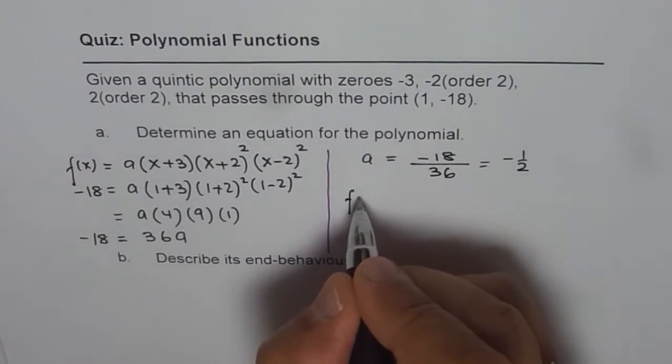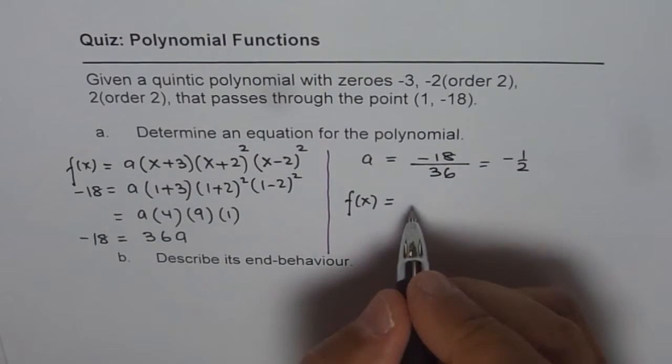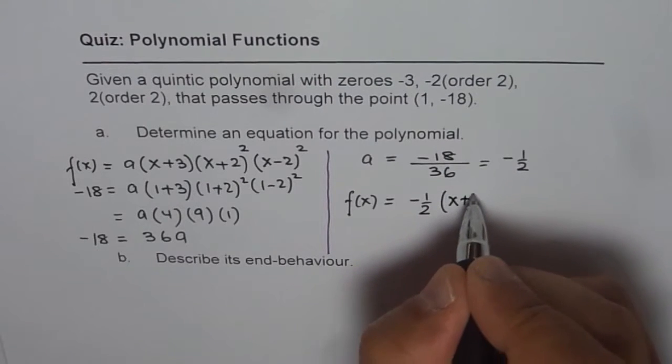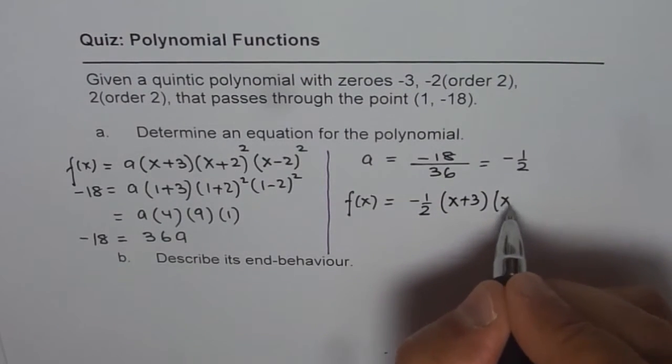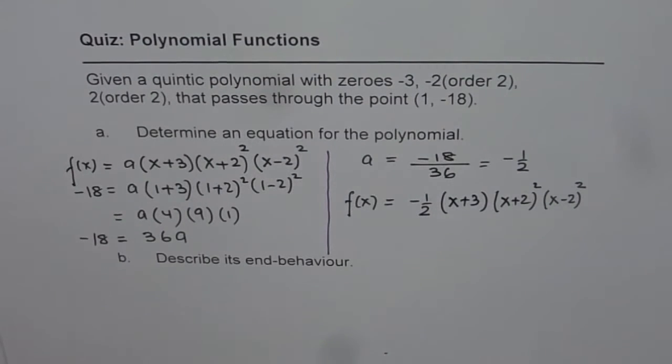So the function, the quintic function for us is f(x) equals to minus half (x + 3)(x + 2)²(x - 2)². So that is part A, the equation of our polynomial.